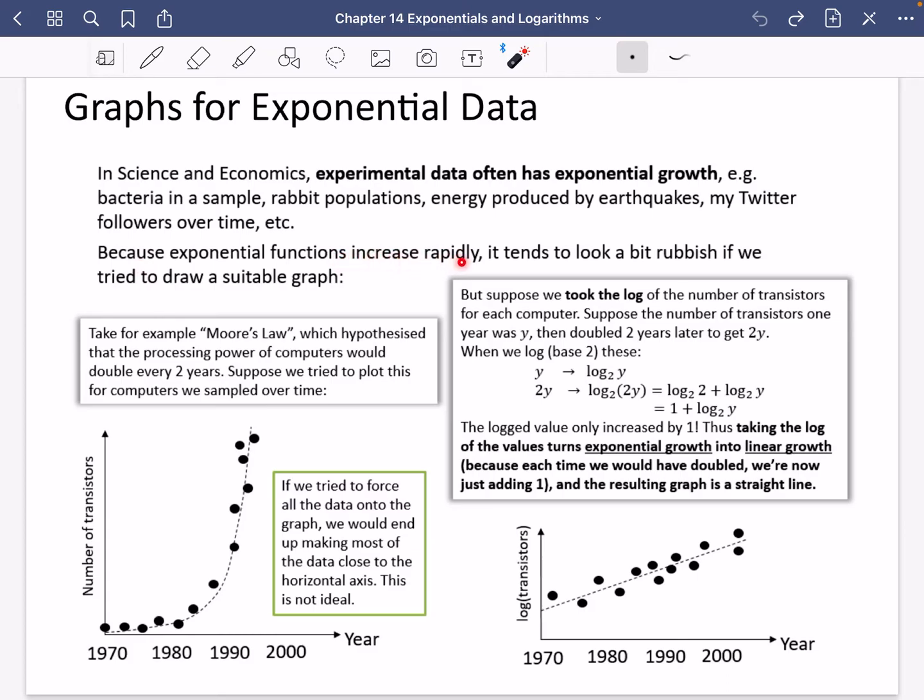So because exponential functions increase rapidly, it tends to look a bit rubbish if we try to draw a suitable graph. So for example, this graph we're going to look at here, this is for something called Moore's law, which hypothesized that the processing power of computers would double every two years. Suppose we tried to plot this with computers we sampled over time.